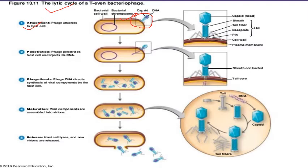The second step is penetration. The outer protein covering of the bacteriophage cannot enter inside the bacterial cell, so it forms a pore-like structure in the bacterial cell wall, through which it inserts its DNA — the genetic material — into the bacterial cell.